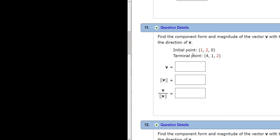Let's do problem number 11. Basically, they give us the initial point and the terminal point of a vector, and we have to find the vector, the magnitude of the vector, and then we have to find this.